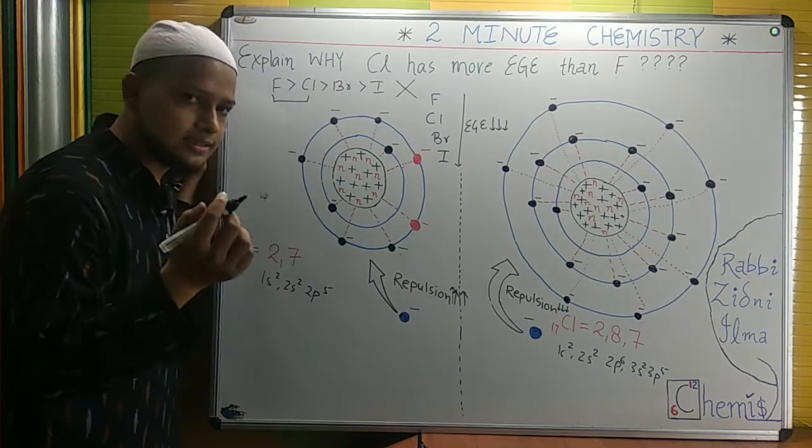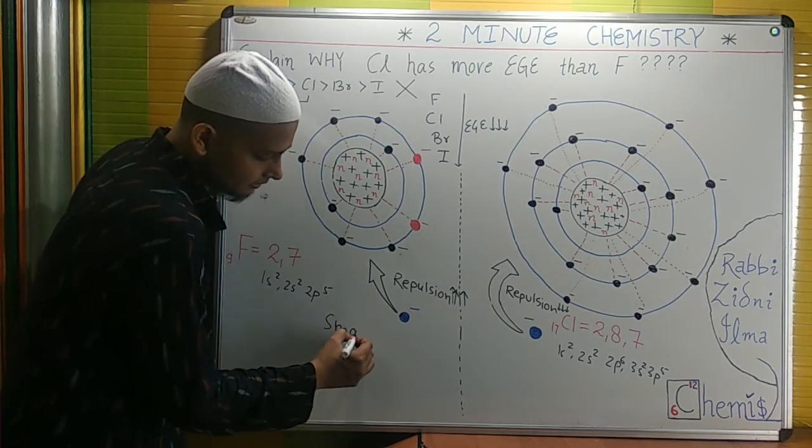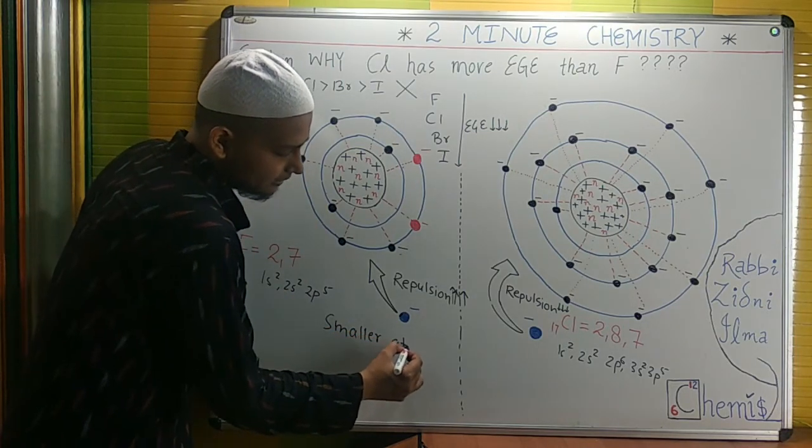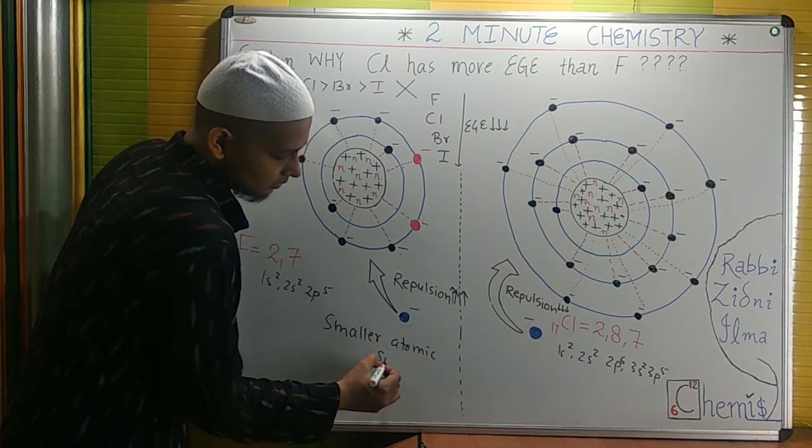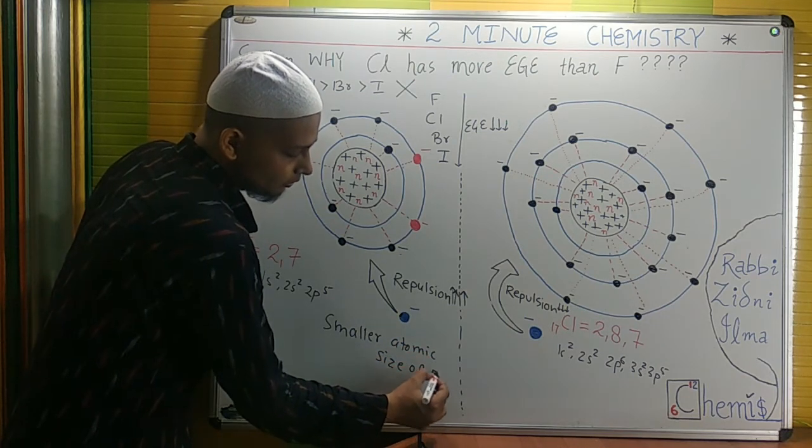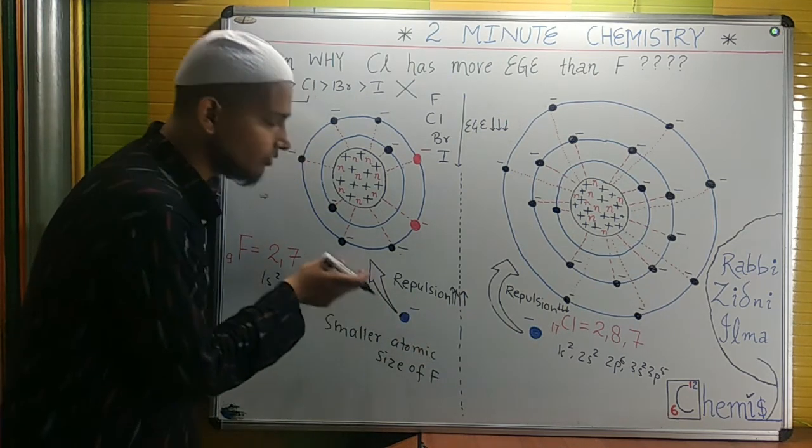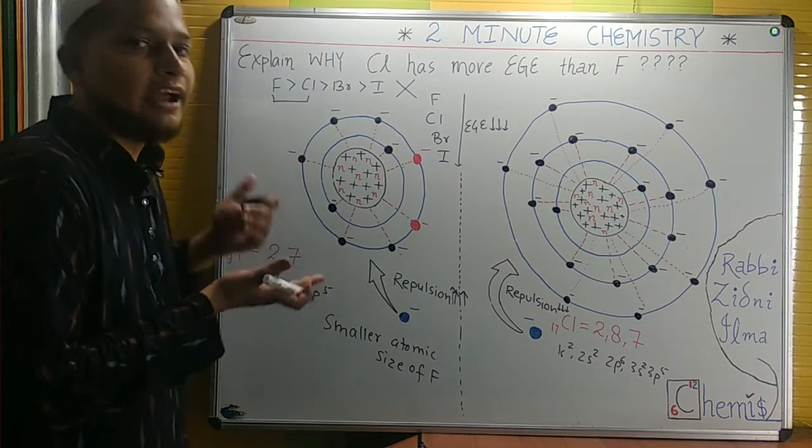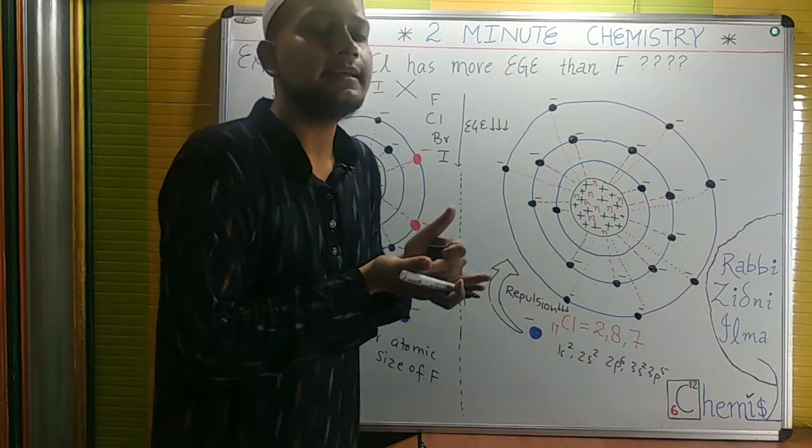So what is the cause? The cause is the smaller atomic size of fluorine, due to which the addition of an electron is resisted and the value of electron gain enthalpy is decreased.